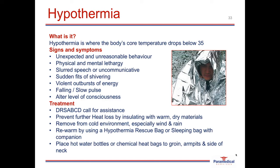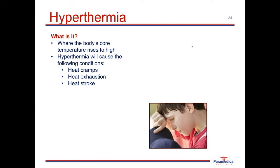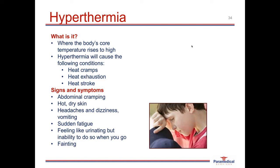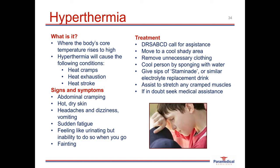Hyperthermia is a condition where the body's core temperature raises higher than normal and the body starts to malfunction. It can cause three conditions: heat cramps, heat exhaustion, or heat stroke. Signs and symptoms range from abdominal cramping, hot dry skin, headaches, dizziness, and vomiting, to sudden fatigue, inability to urinate, and decreased level of consciousness. Treatment involves DRS-ABCD, calling for assistance, moving the patient to a cool shady area, removing unnecessary clothing, cooling with a damp cloth, giving small sips of Staminade or similar electrolyte replacement drinks, and assisting to stretch any cramped muscles. If ever in doubt, seek medical assistance.